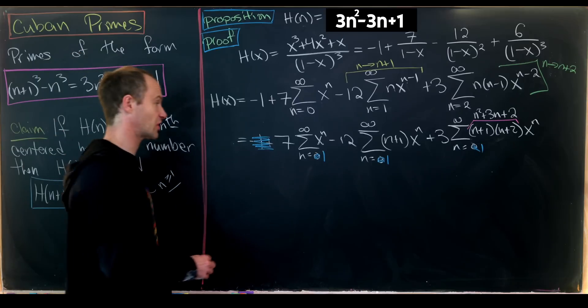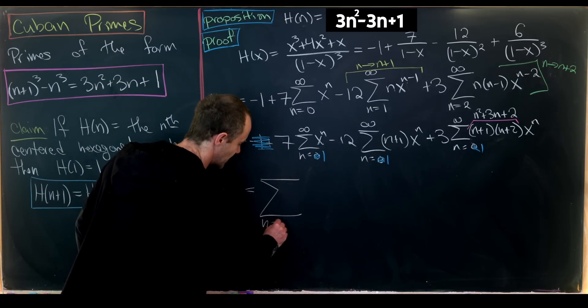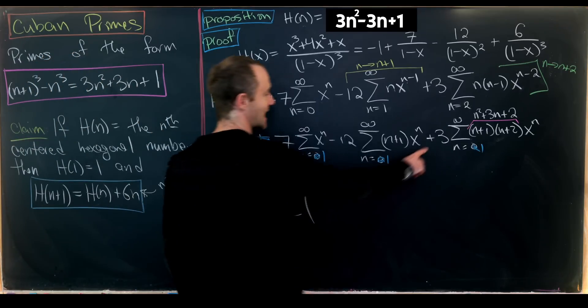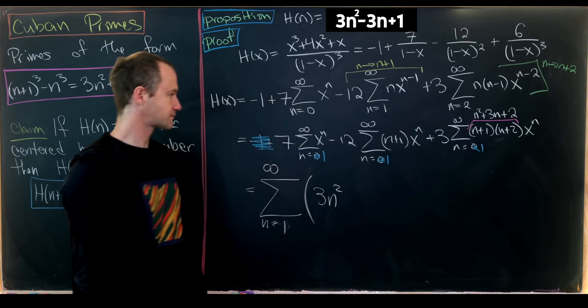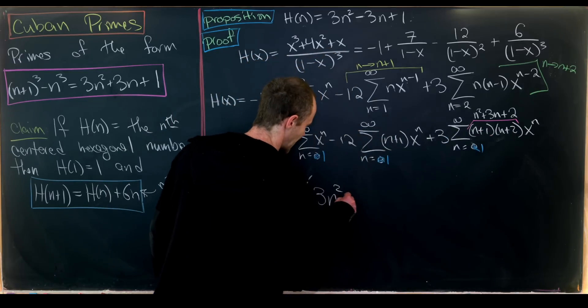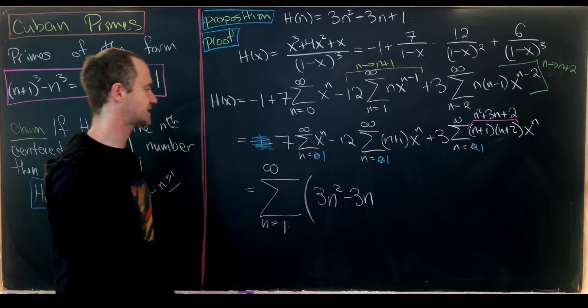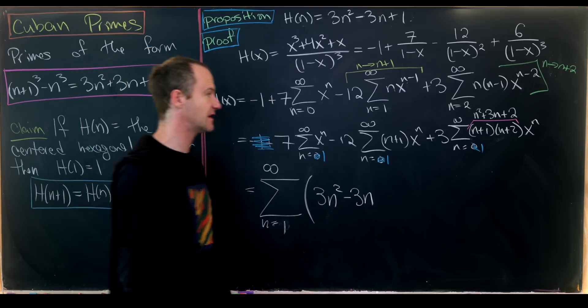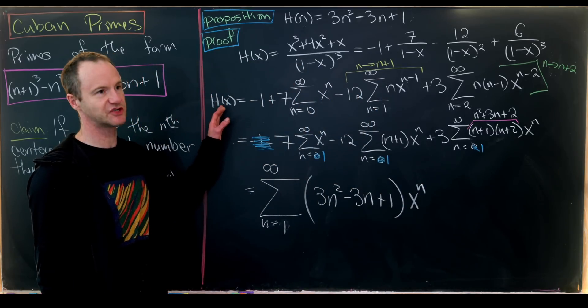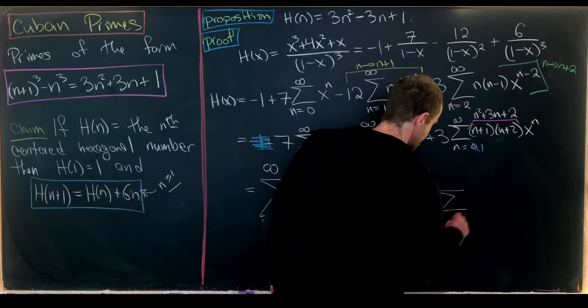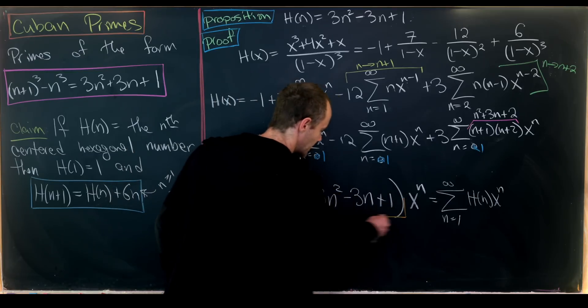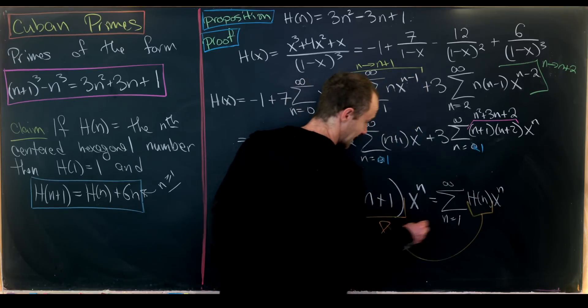Combining into one sum: Σ(n=1 to ∞) [3n² + coefficient·n + 1]x^n, where the n² coefficient is 3, the n coefficients combine, and the constant terms give 1. Since this is the generating function for centered hexagonal numbers H(x) = Σ h(n)x^n, comparing coefficients gives our desired result.